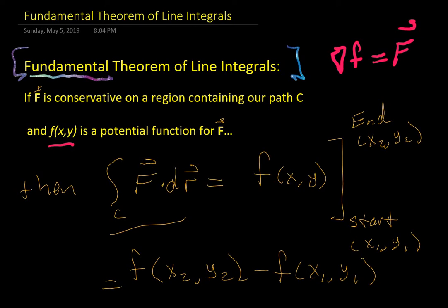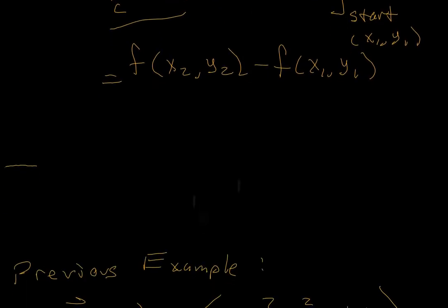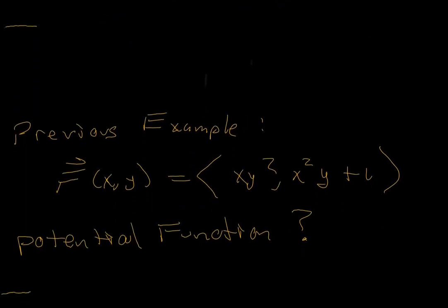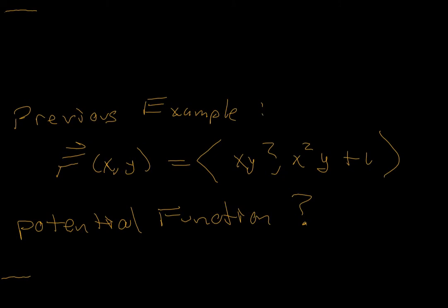So we're going to take it for a test drive on this example I've been toying with for the last couple of segments. So we had a vector field, xy², this was m, and x²y plus 1, this was n, and we found that it was conservative, but we didn't do anything with it afterwards. I just told you that was what gave us the power to go farther and faster with our work calculation.